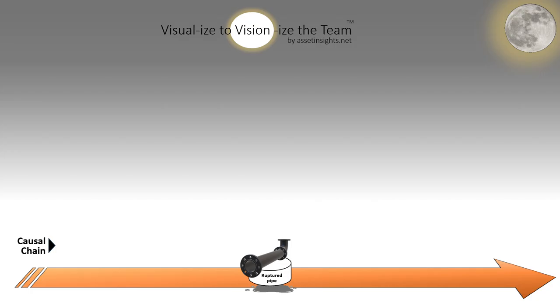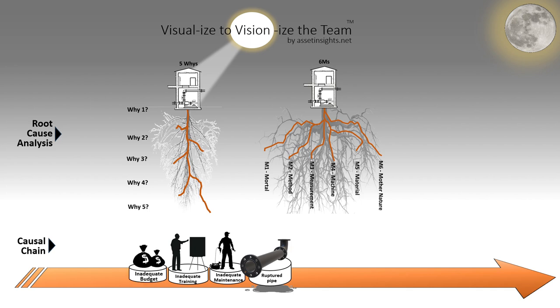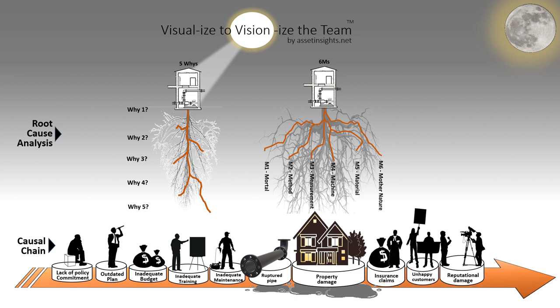Every broken pipe has deeper roots. Causal chains show us what happened. Root cause analysis reveals why. In another video, we dig beneath the surface using the 5 Whys and the 6M method to uncover the true drivers behind failure and how to stop them at the source.